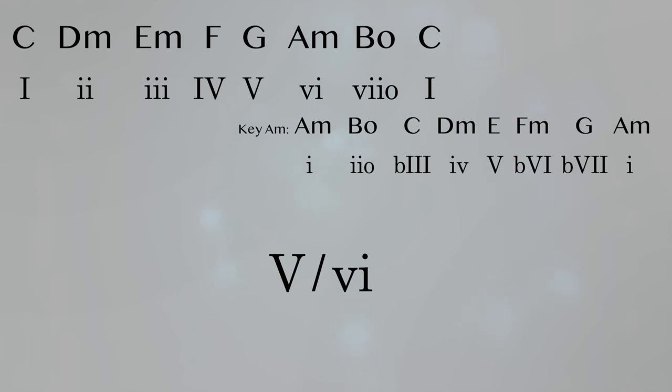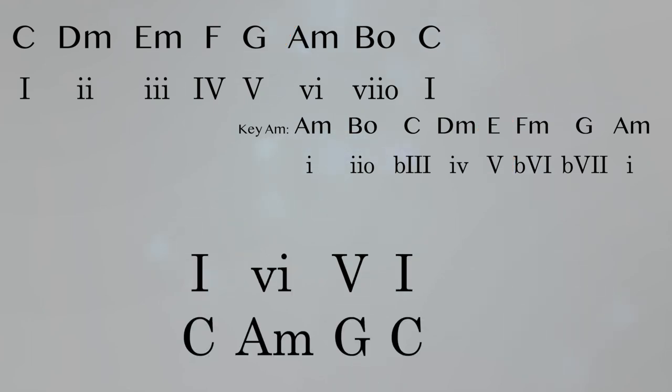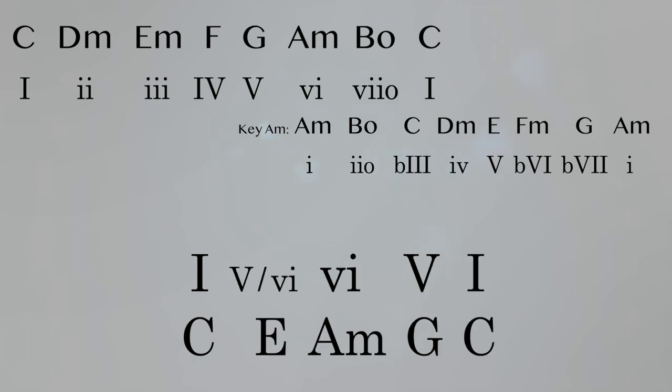So now, if we were to have a progression that went one, six, five, one, we could add in our secondary dominant and change the progression to one, five of six, six, five, one. Listen how that sounds.